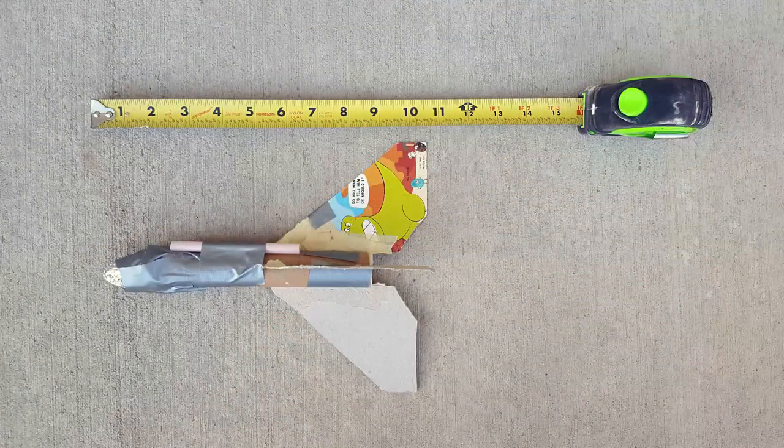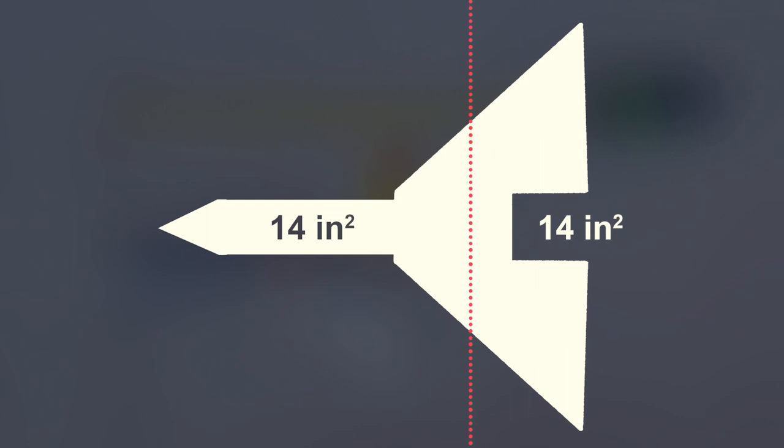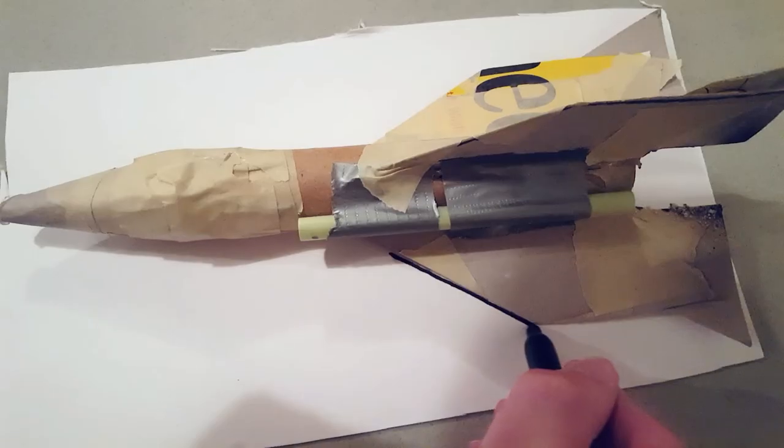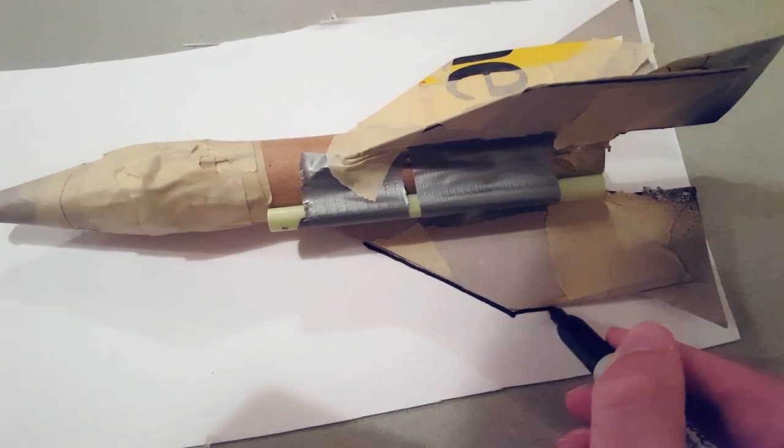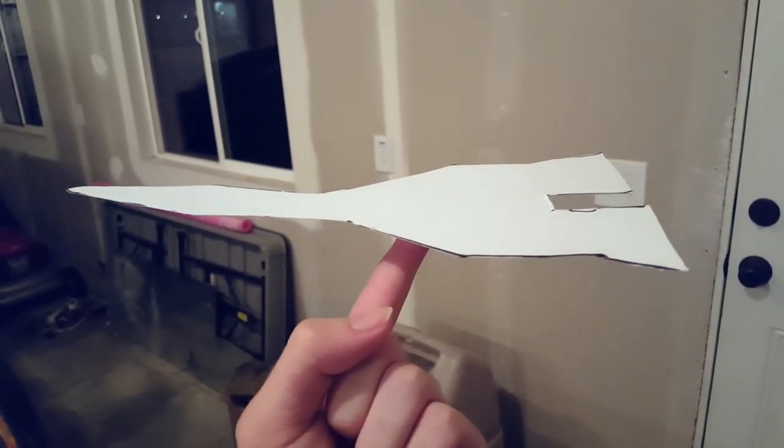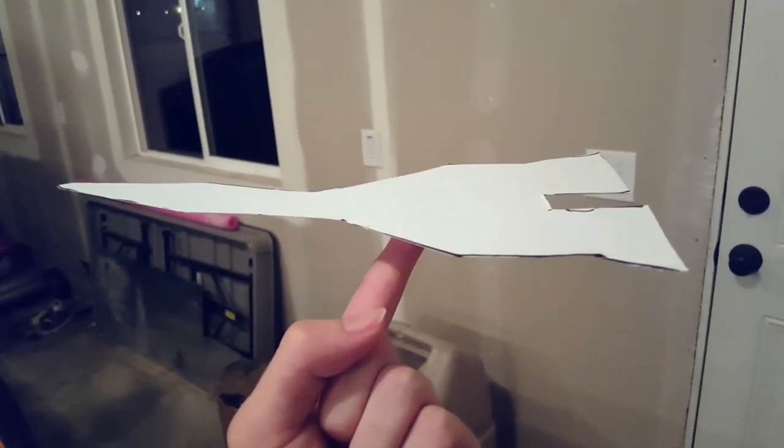The center of pressure is where a two dimensional cutout of your rocket would balance. Basically there's an equal amount of area on both sides of the center of pressure. You can test it by making a cardboard cutout of your rocket and balancing that on your finger, but in our opinion that's a waste of time since you can usually just eyeball it.